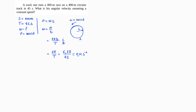We can also find the tangential velocity V equals S divided by T, so 400 meters divided by 45 seconds is approximately 8.9 meters per second. Note that to find angular velocity we didn't need the circumference, but to find linear velocity we do.